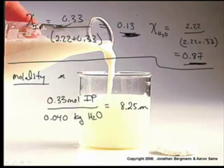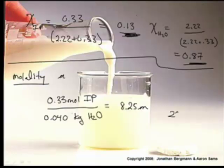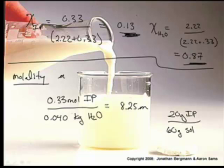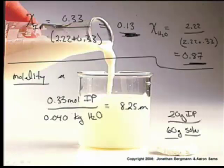What else do we need to do? The percent mass - that's easy. There are 20 grams of isopropyl alcohol in 60 grams of solution total. Where did I get 60? It was 20 grams of isopropyl alcohol plus the 40 grams of water, so the total is 60. That's 20 over 60, which is 0.33, times 100 - so that would be 33 percent mass.